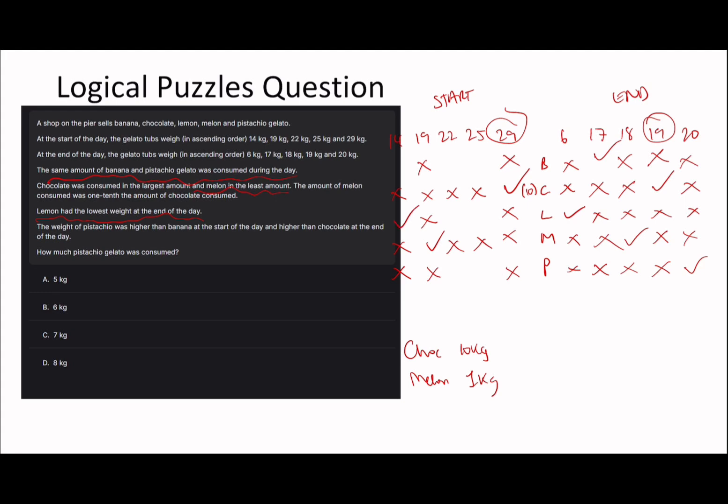I think lemon has to be 14 kg at the start, because otherwise if it was 22, it would have been lemon that was consumed the most. We could have got that information from before. So lemon was 8 kg consumed, melon was 1 kg. The weight of pistachio was higher than banana at the start, so pistachio is going to be 25, banana is going to be 22.